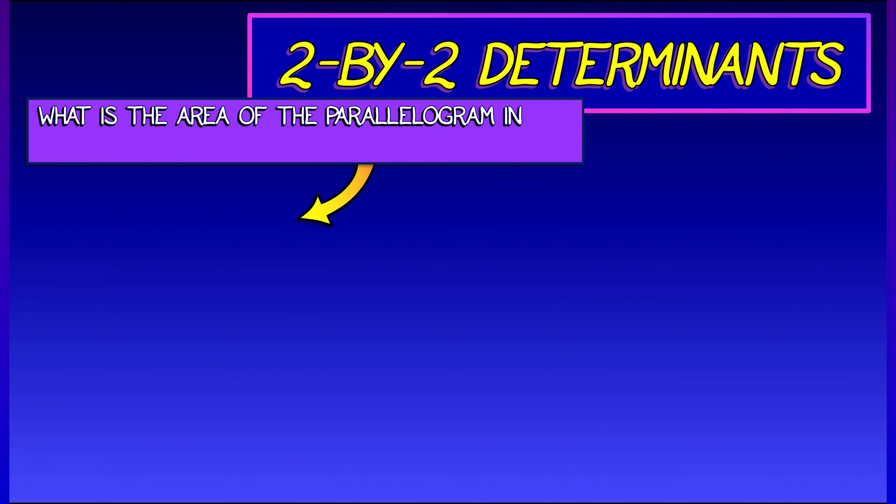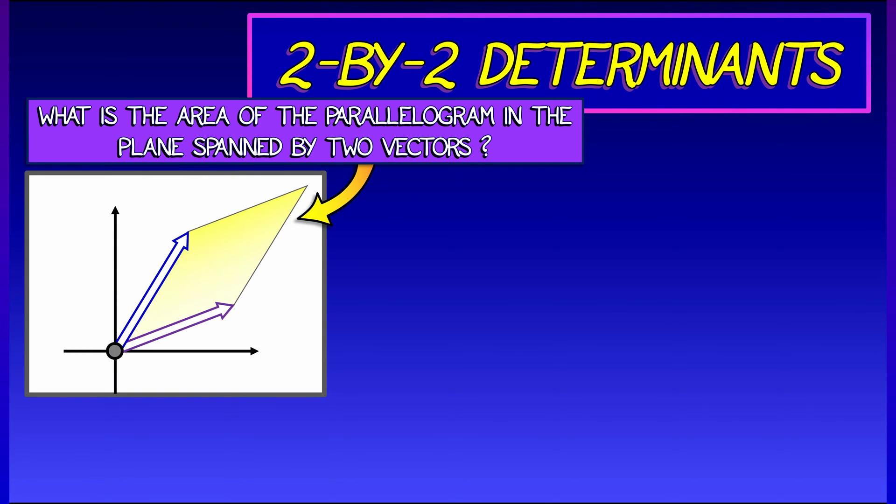A simple case, two by two determinants. Let's go back and think about the parallelogram spanned by a pair of vectors in the plane. Remember when we thought about those things from cross products?